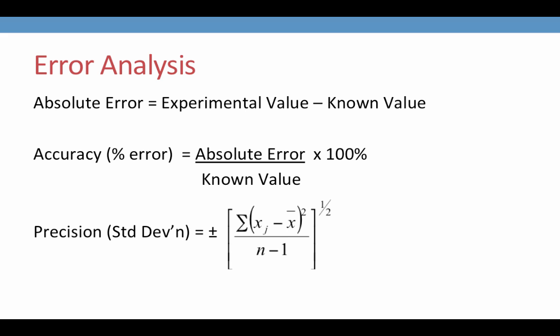From absolute error, we can calculate accuracy. Accuracy is a measure of error that takes into account the magnitude of the known value. Simply stating that you were off by 10 grams doesn't really tell you how close you were to the true value. If the object was supposed to be 1 kilogram, being off by 10 grams isn't so bad. However, if the object was only supposed to weigh 5 grams, and you're off by 10 grams, that's a much larger deal. So percent error gives an idea of the absolute error in terms of the magnitude.